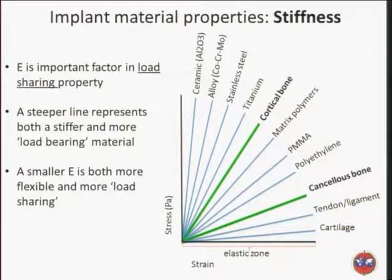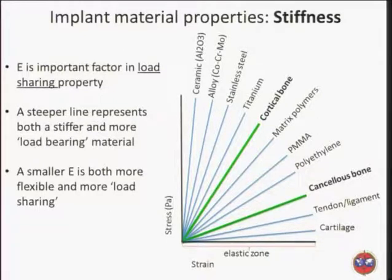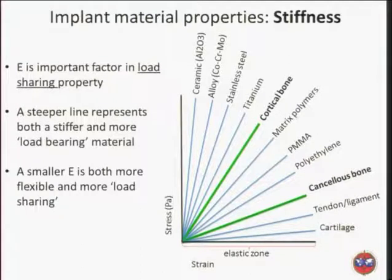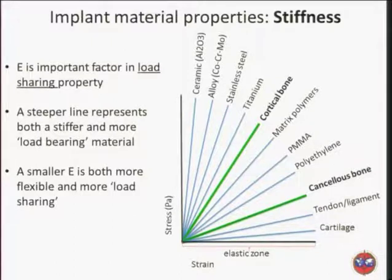In general, we try to use materials that are more flexible and will be more load sharing with the bone in order to encourage bone healing. But there are situations where you can't share with the bone — for instance, in bone loss or very fragmented fractures — where you may select a material that is more load bearing. Different implant companies have gone from stainless steel to titanium and now many are going back to stainless steel. One disadvantage of titanium is that it can fracture; using quite thin plates, many ended up fracturing. Stiffness guides us towards whether we're using a load sharing or load bearing implant.